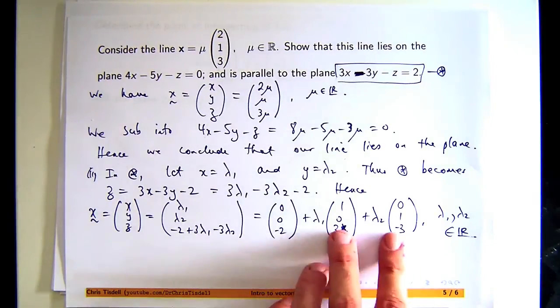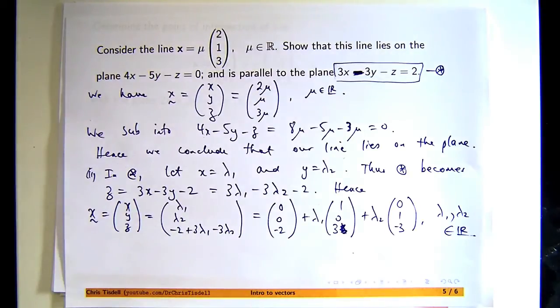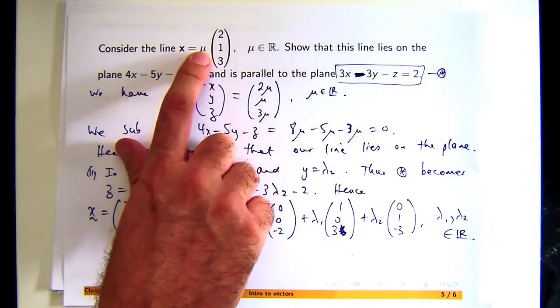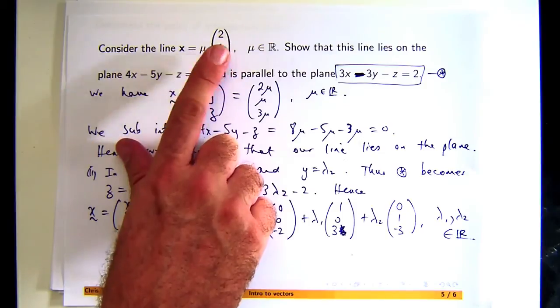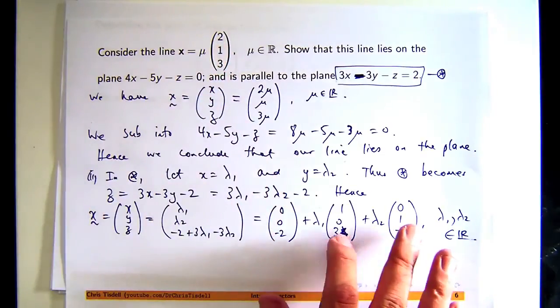These two vectors are non-parallel. You can't make up one just by a scalar multiple of the other. Forget about the mu, we'll just take mu equals 1. That's a vector that's parallel to the line associated with this.